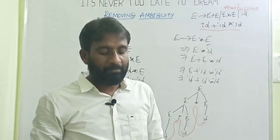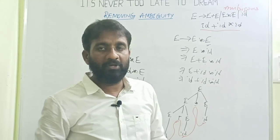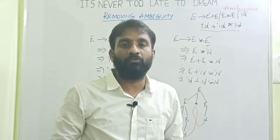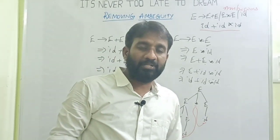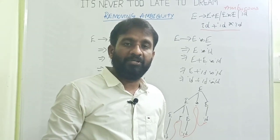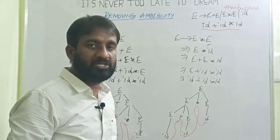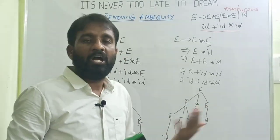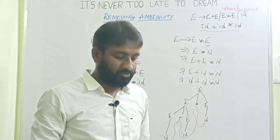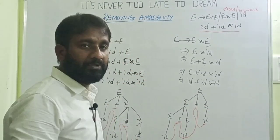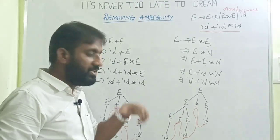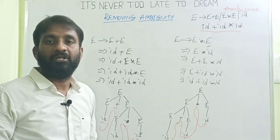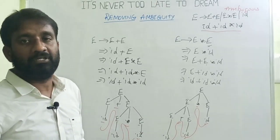To remove ambiguity, there is no straightforward method and no strict algorithm for automatically converting an ambiguous grammar into an unambiguous grammar. You have to analyze the grammar: why does ambiguity exist, where does it exist, and how can we remove it?